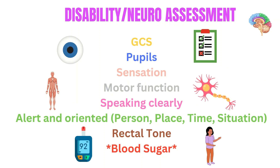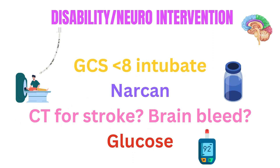Next, how is sensation and motor function throughout the body, especially in the extremities? Are grips equal on both sides? Can they push and pull without issues? Is pedal flexion and extension equal on both sides? Can they lift all extremities against resistance? Is the patient speaking clearly? Are they alert and oriented to person, location, time, and situation? For interventions, include giving dextrose for hypoglycemia, giving Narcan if an overdose is suspected, and getting a head CT to assess for head bleeds and other pathologies.